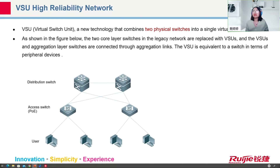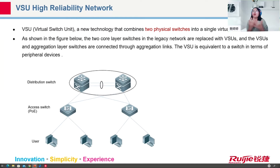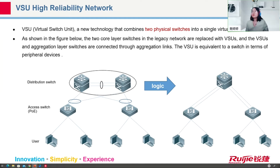With VSU, we combine the distribution switches into one virtual switch. From the customer's perspective, the logical topology appears as just two access switches connected to one logical distribution switch, with multiple links available. The access switches see only one upstream device and can use link aggregation across all links simultaneously, enabling load balancing. VSU provides a higher reliability network.